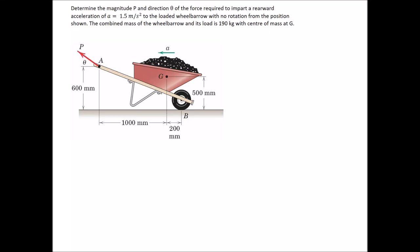Determine the magnitude P and direction theta of the force required to impart a rearward acceleration of 1.5 meters per second squared to the loaded wheelbarrow with no rotation from the position shown. The combined mass of the wheelbarrow and its load is 190 kilograms with the center of mass at G. To start this question, we're going to draw the free body diagram and the kinetic diagram.